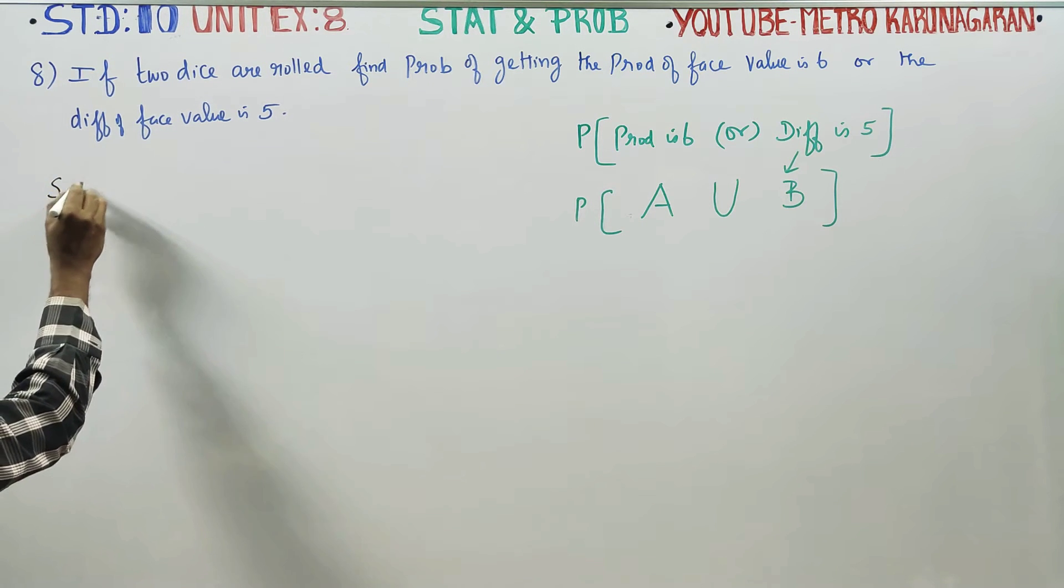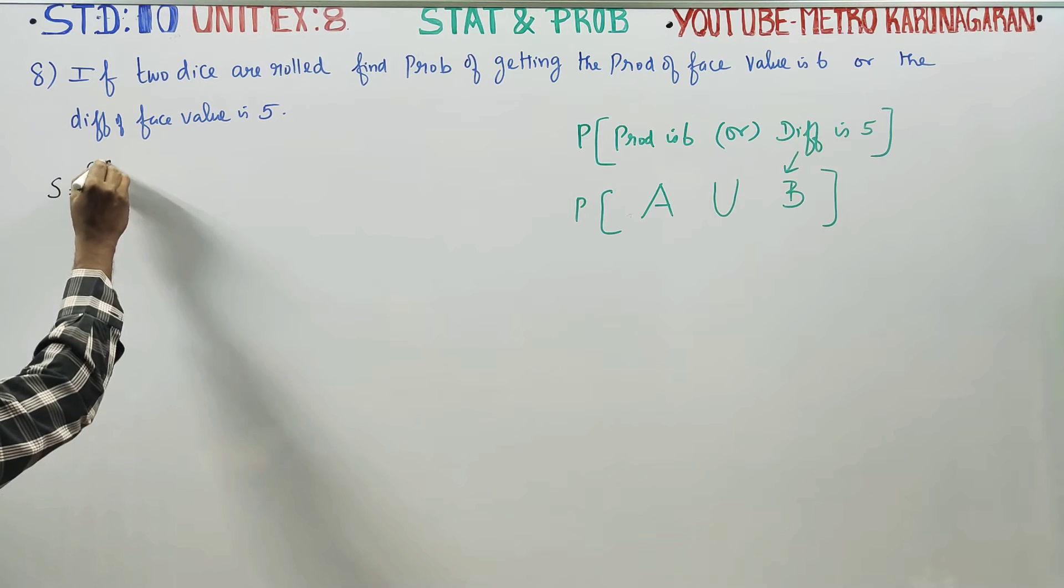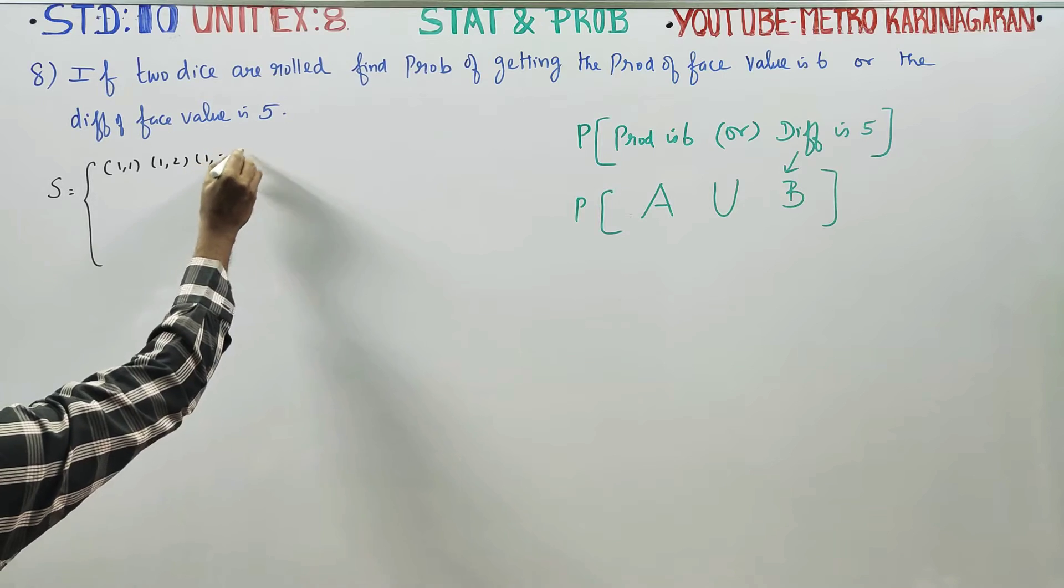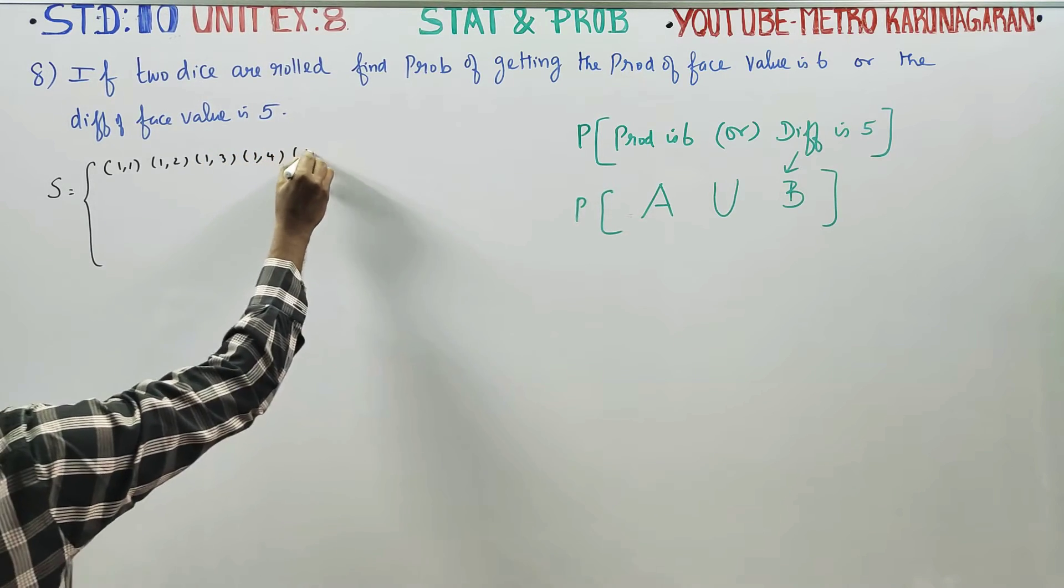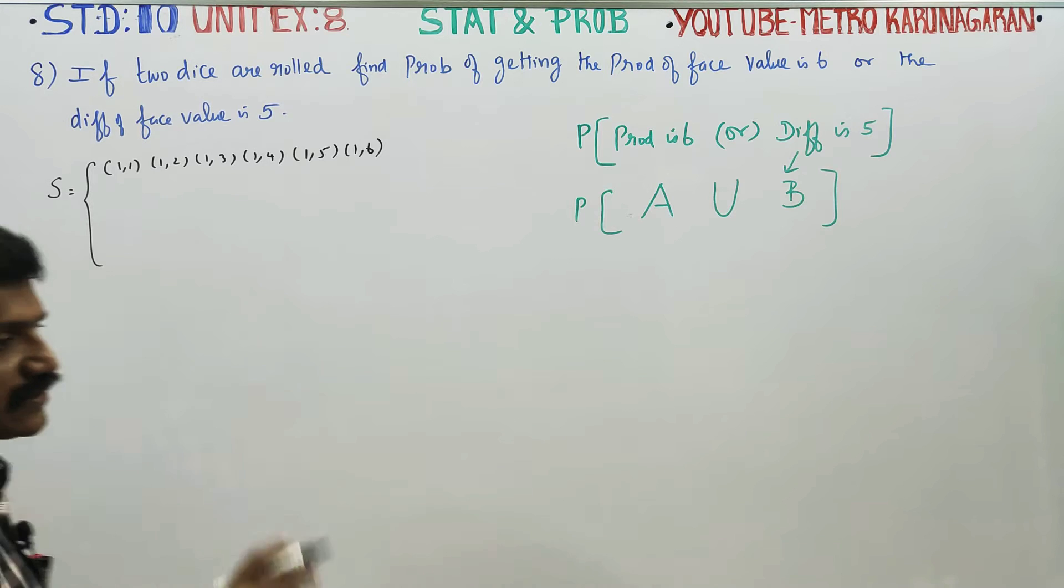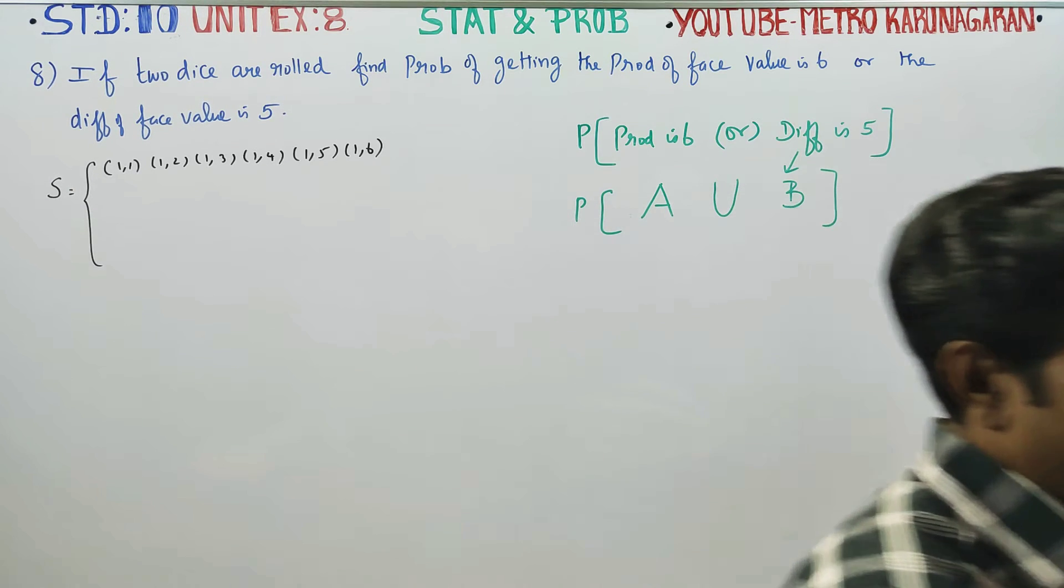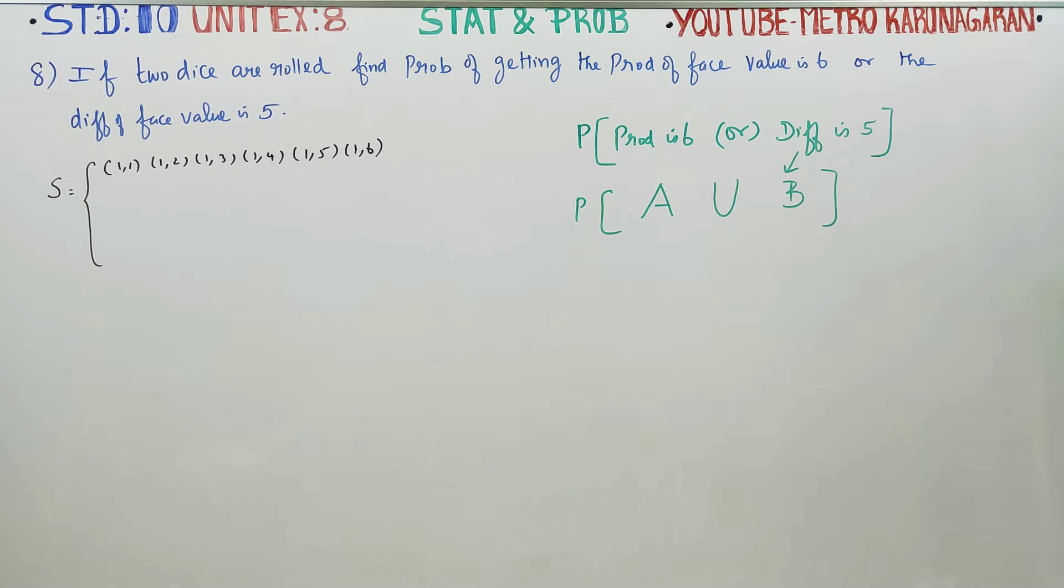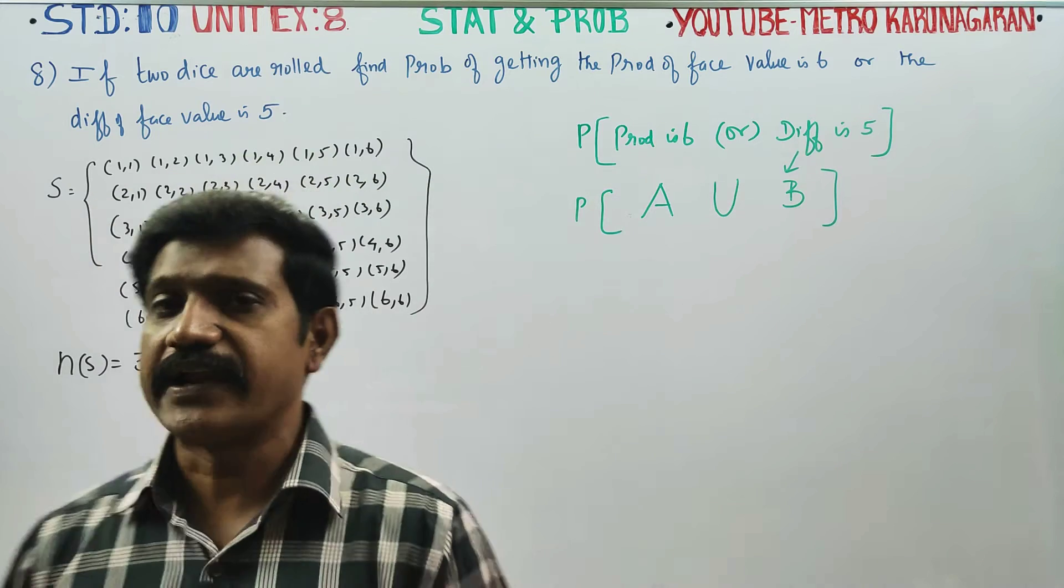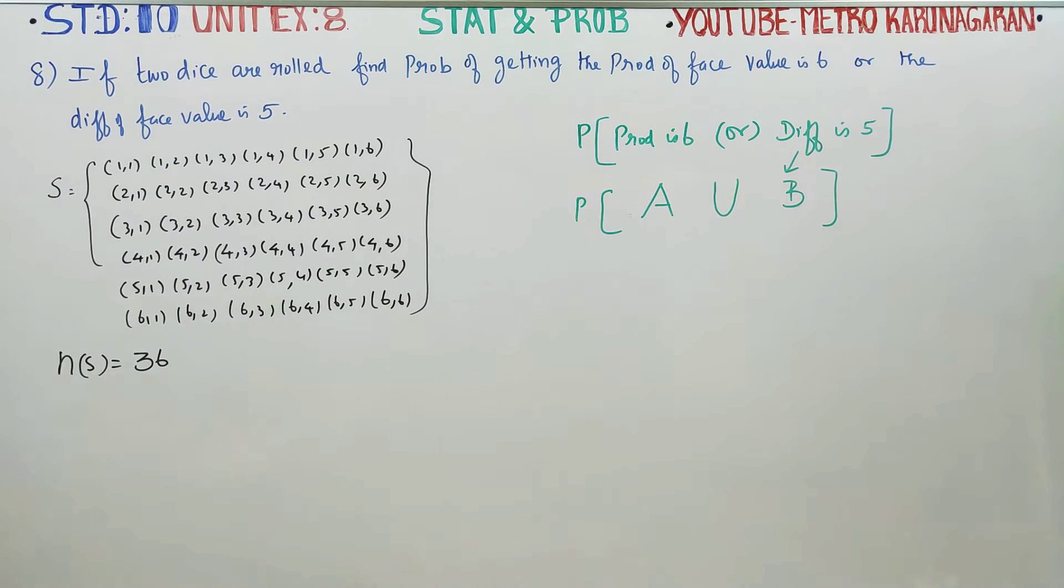If two dice are rolled, you will start with (1,1), (1,2), (1,3), (1,4), (1,5), (1,6). Likewise, you will finish up to (6,6). After finishing, N of S is equal to 36. Total, we have 36 elements.